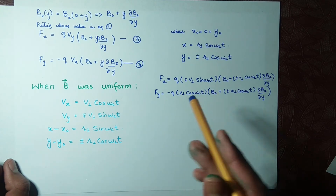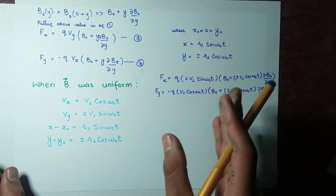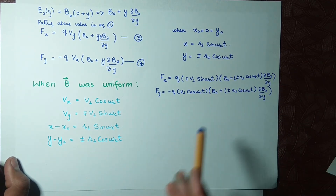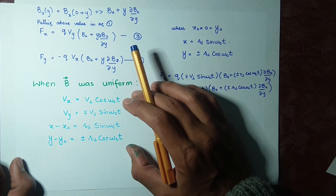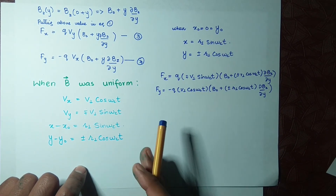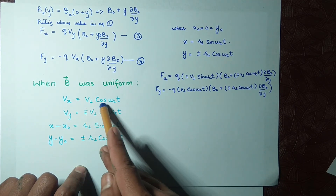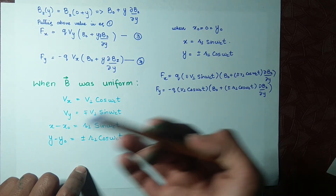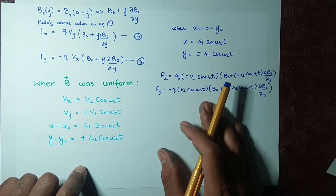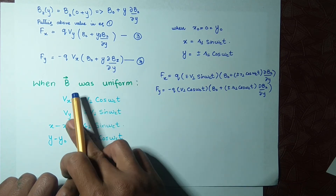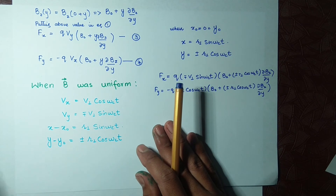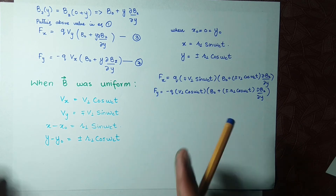I had told you to recall some important equations from previous lectures — you need to remember them by heart. These equations, proved in Lectures 7 and 8, are: vx = v⊥ cos(ωct), vy equals its corresponding term, and x − x0 equals its corresponding term. We already discussed everything about these equations in detail, so I will not repeat them here.